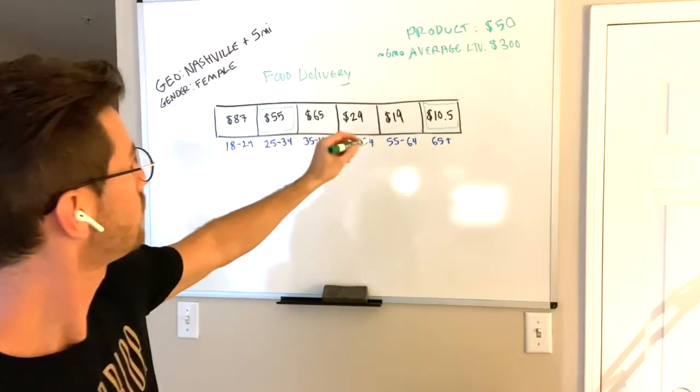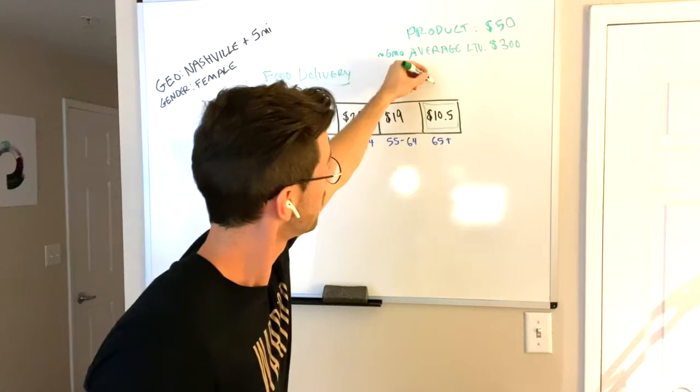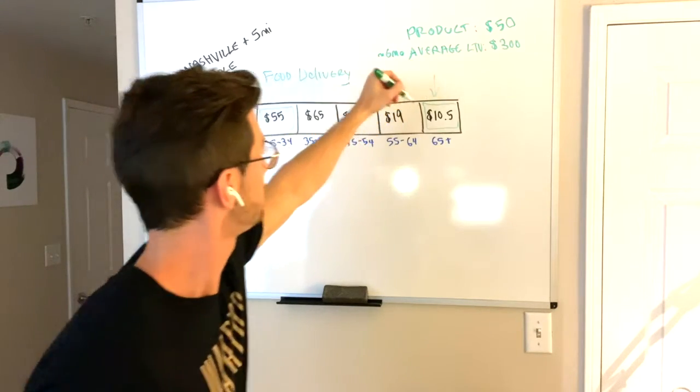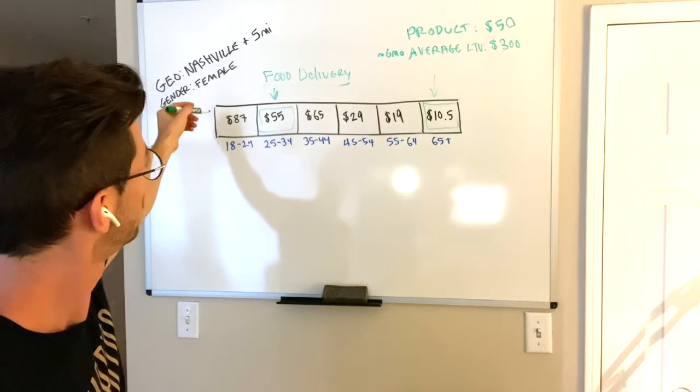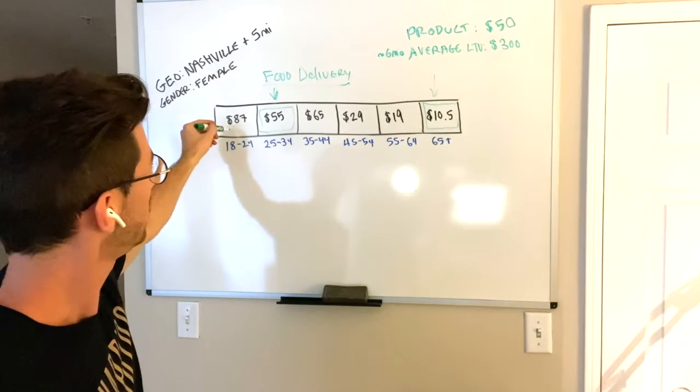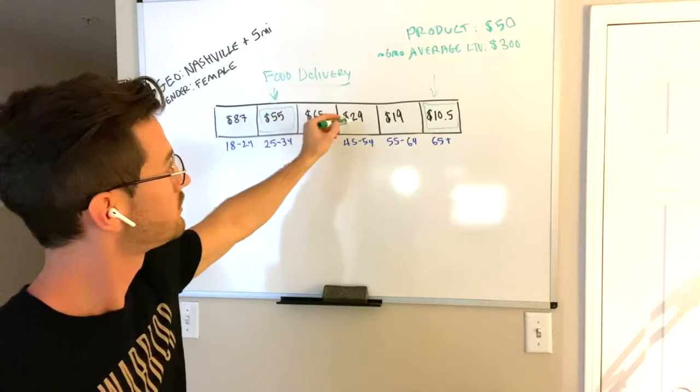So you can see here on this little chart, I have 65 plus the cost per acquisition with just $10.50, 25 to 34 age group was $55 per acquisition. You can see these other ones here $87, $65, $29, $19.